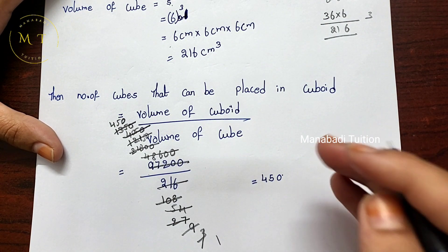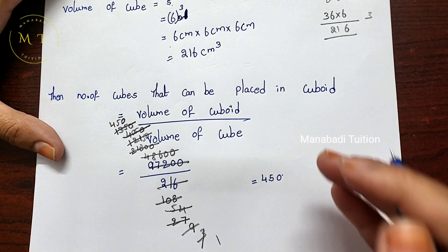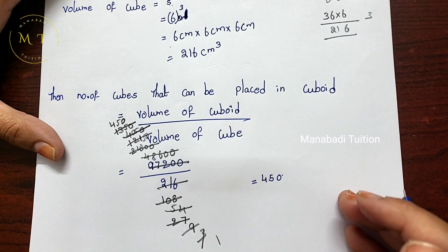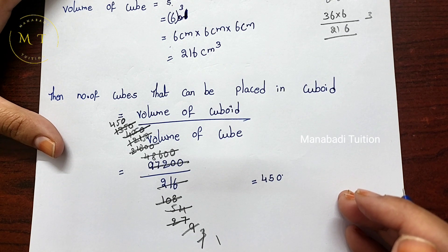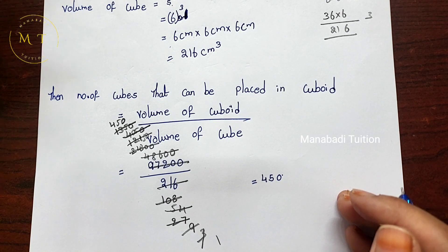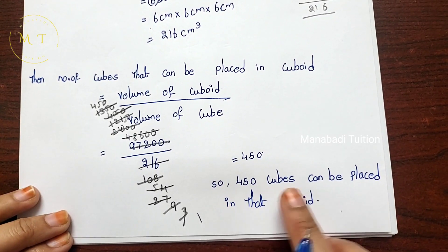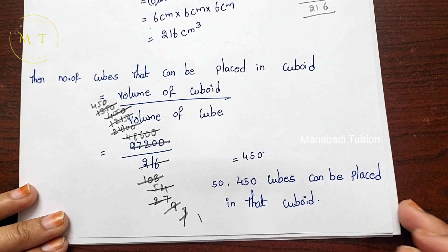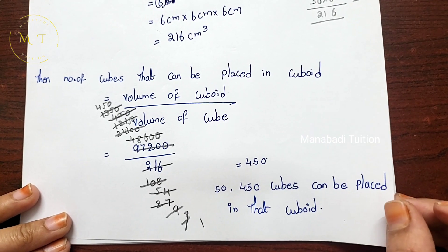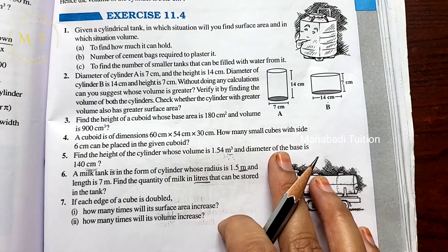After cancellation, the total is 450. Therefore, 450 small cubes can be placed in the given cuboid.